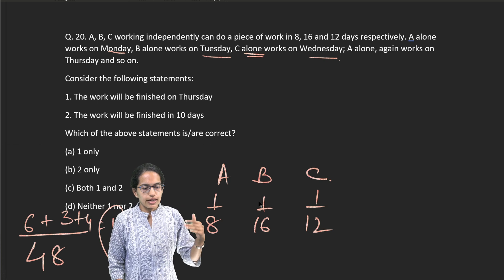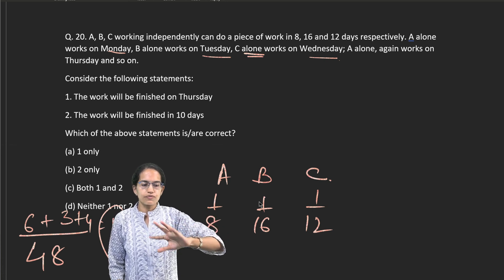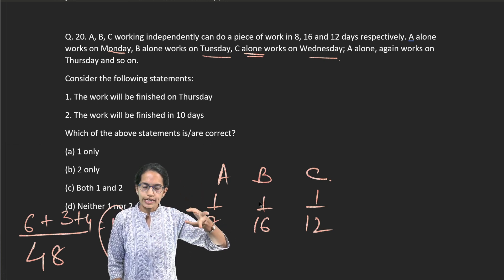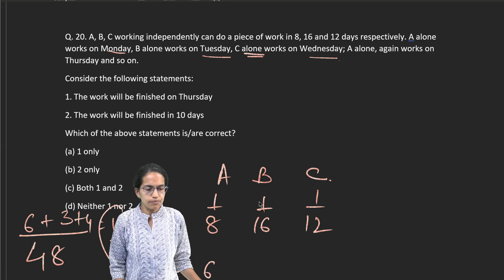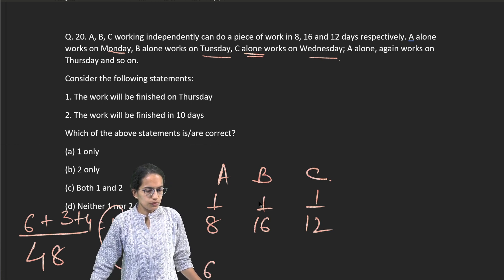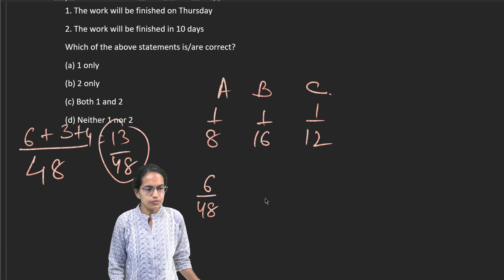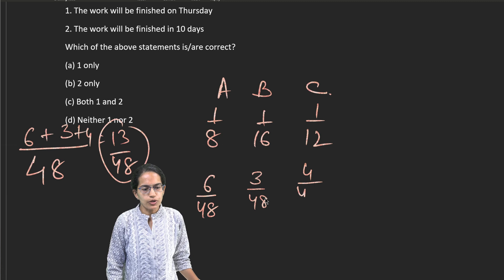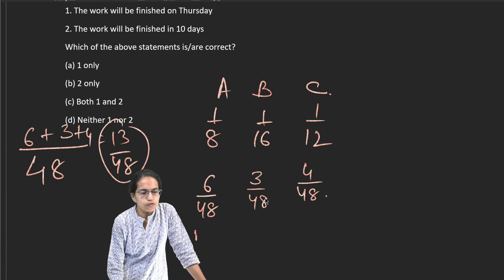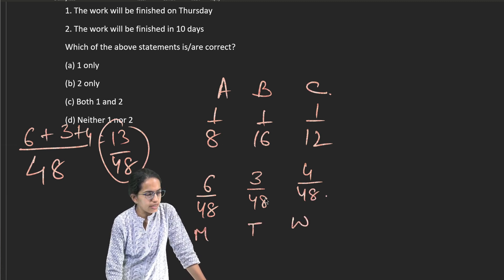But let me convert every of these terms in the rate of 48. So this would be 6 by 48. This would be 3 by 48. And this would be 4 by 48. Now, this is for Monday, Tuesday and Wednesday.